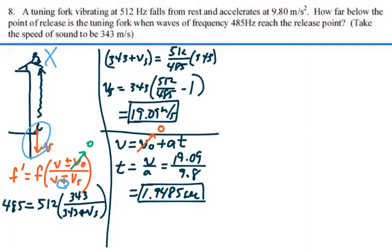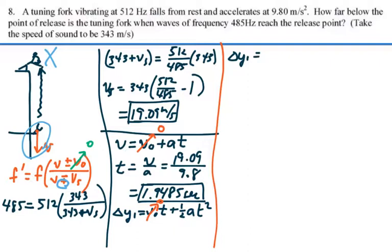The displacement to that point at that time is called delta y1. It's going to equal its initial velocity times time plus one half acceleration times time squared. Of course again the initial velocity of the tuning fork is zero, so it's just going to be one half at squared. So delta y1, location of the tuning fork when it released that sound, when it had that velocity, is equal to one half times the acceleration 9.8 times 1.9485 seconds squared. And that's equal to 18.6 meters.